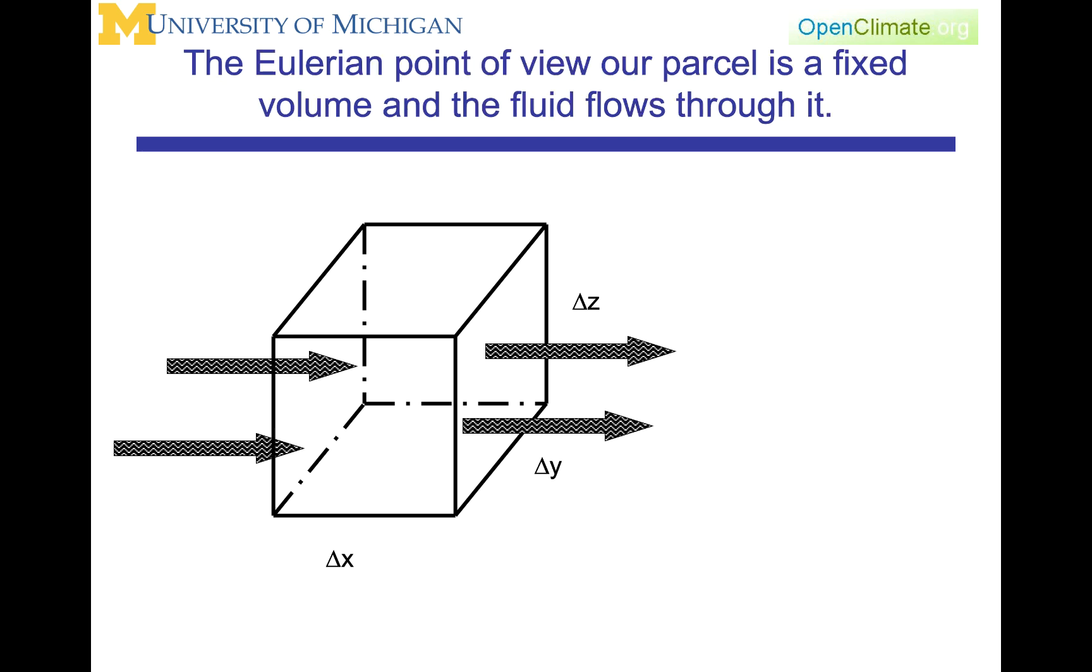We will start this from an Eulerian point of view. Therefore, our parcel is a fixed volume in space and the fluid flows through it. And what is shown here is the fluid flowing in the x direction. If you consider a volume like this, then the amount of mass that flows into it is going to be proportional to the velocity at which it is flowing. It's also going to be proportional to the area of the interface that it's flowing through.